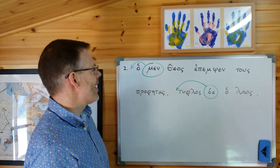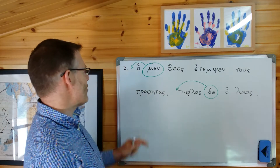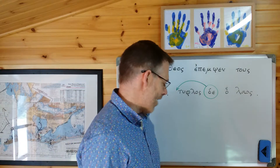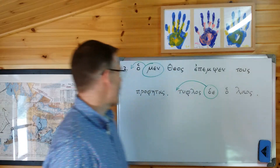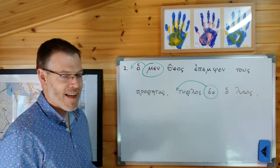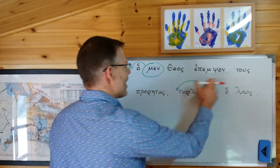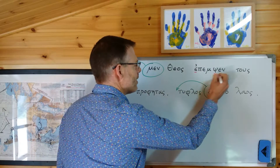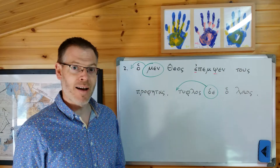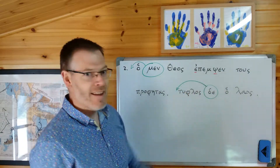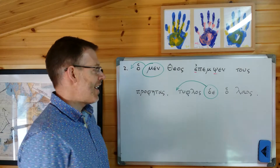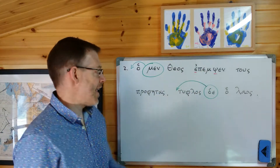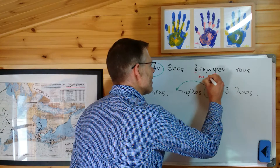Ho men theos epempsen tous prophetas, ho de typhlos holos laos. Epempsen is from pempo - 'I send' - epsilon augment, sigma suffix turning the pi to a psi, and 'n' is the third singular aorist ending. Epsilon augment plus sigma suffix equals aorist, so that means 'he sent.' And who's the 'he'? Ho theos - God, in the nominative singular. So God sent - what did he send? A noun in the accusative: tous prophetas.